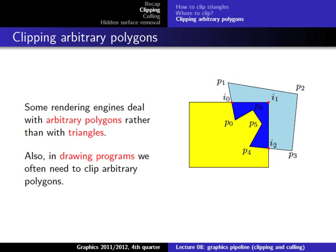I will only explain it in 2D because that is much easier to draw and explain, but the generalization to 3D is straightforward. So what we have is a clipping area — in the 2D case this is just a rectangle — and then we have an arbitrary polygon, for example this blue-colored shape here.